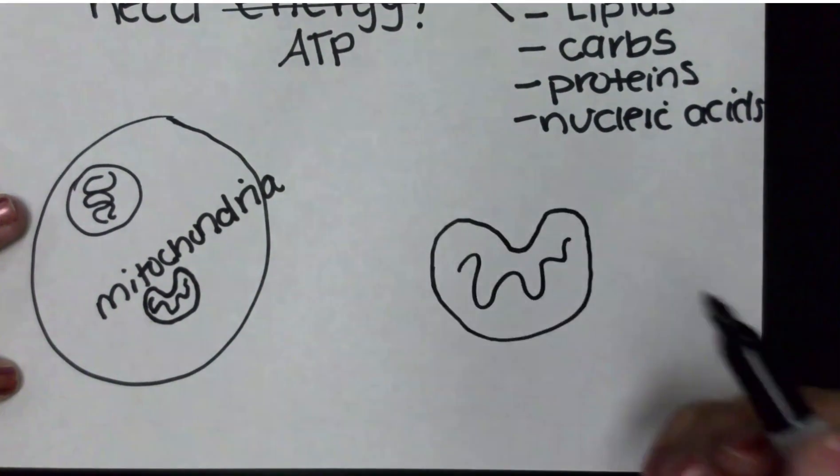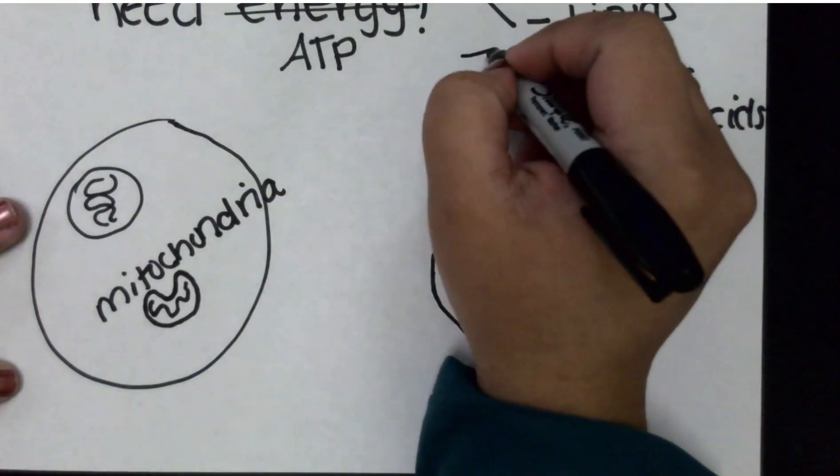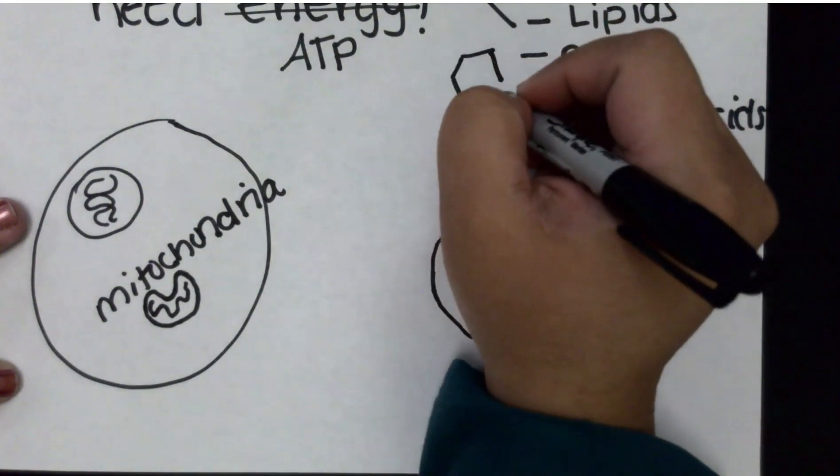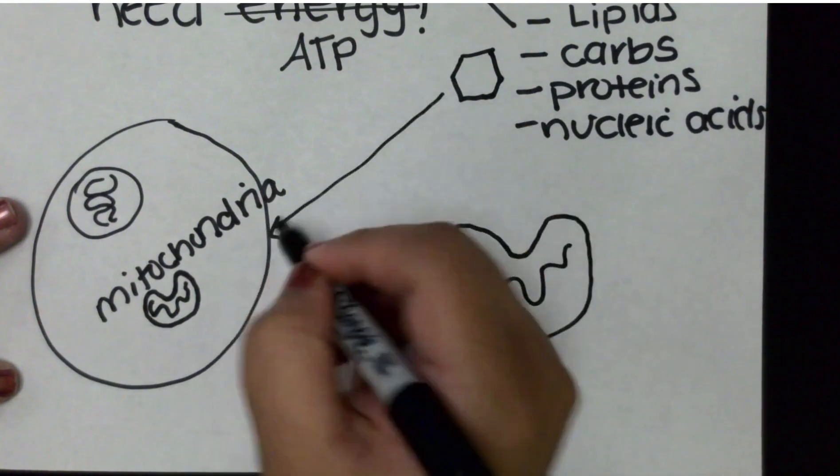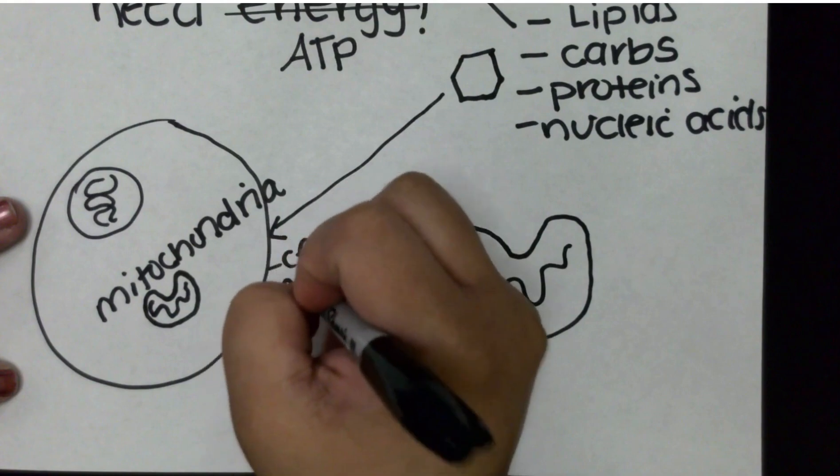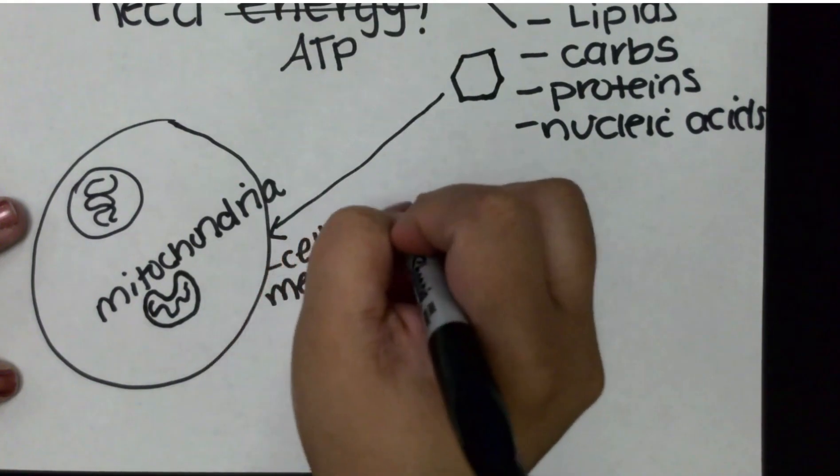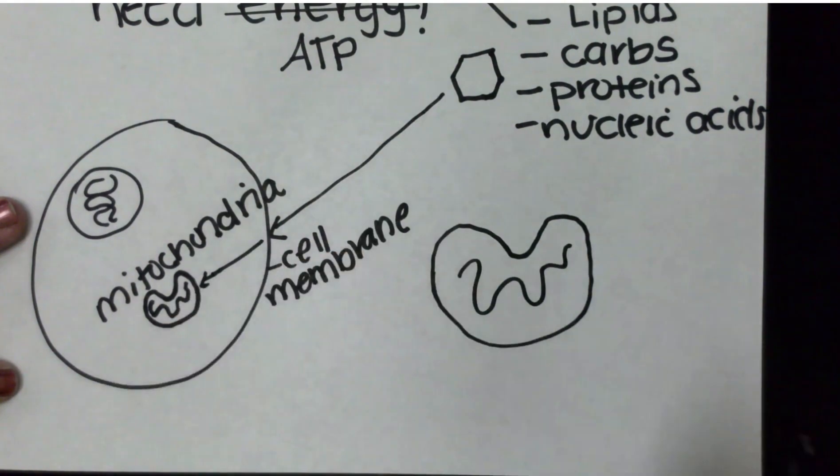And when we eat, for example, carbs which are found in all foods—and our carbs are going to be represented with a little hexagon pentagon—we'll need to go in through the cell membrane. This is the cell membrane, in through the cytoplasm until it reaches the mitochondria.